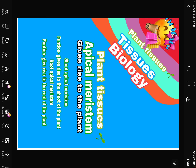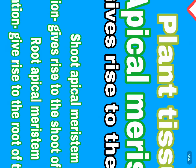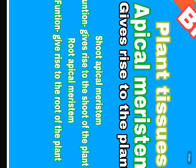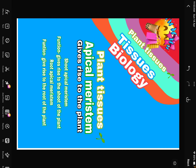Now let's learn about apical tissue first. Apical tissue gives rise to the plant of course, and it's divided into two parts: shoot apical meristem tissue, which gives rise to the shoot of the plant, and root apical meristem tissue, which gives rise to the root of the plant.